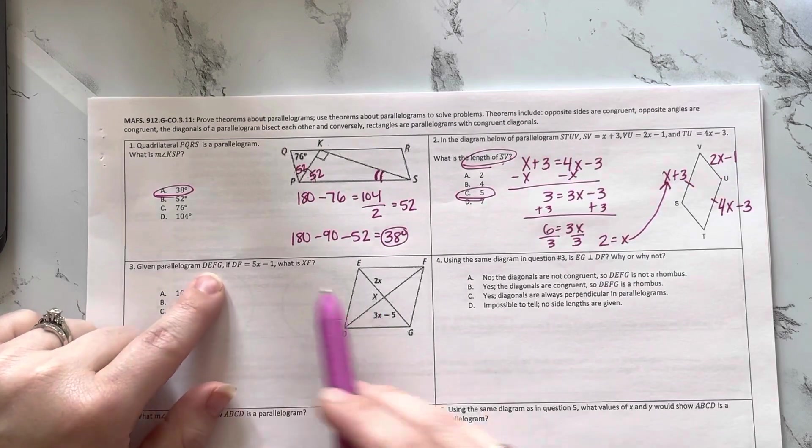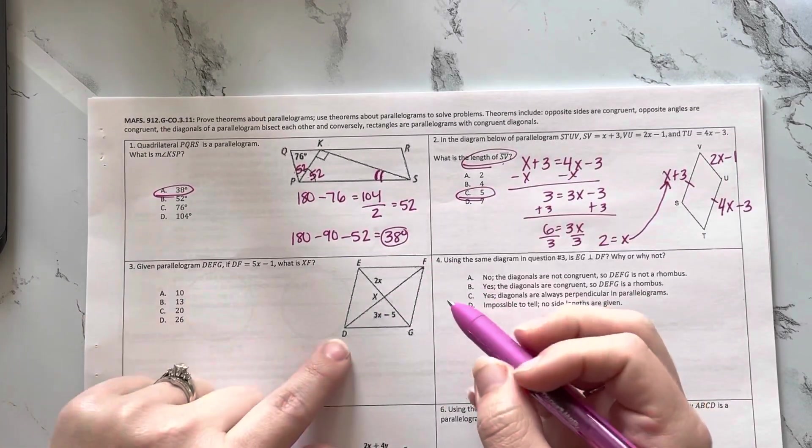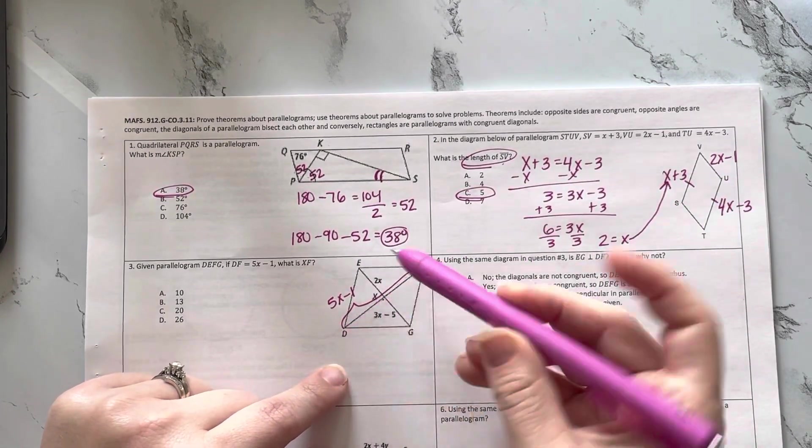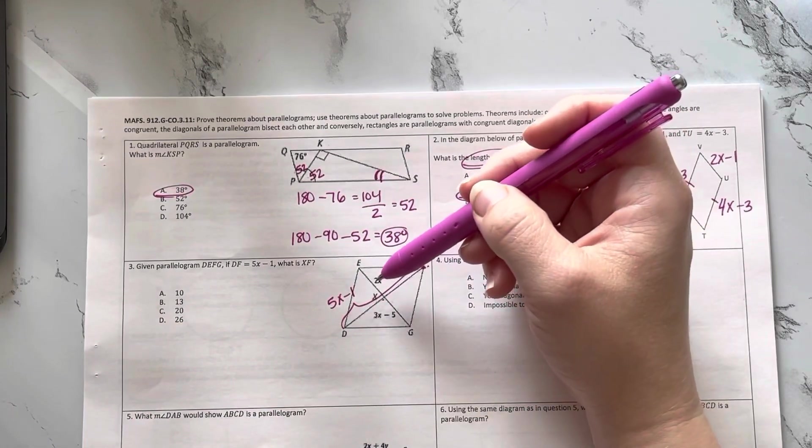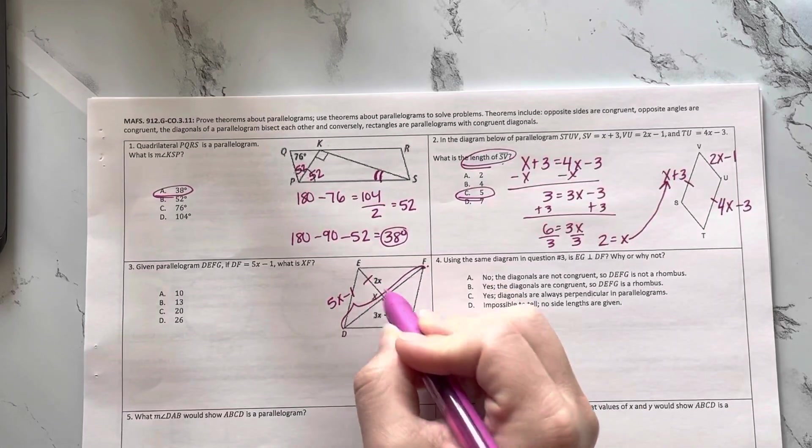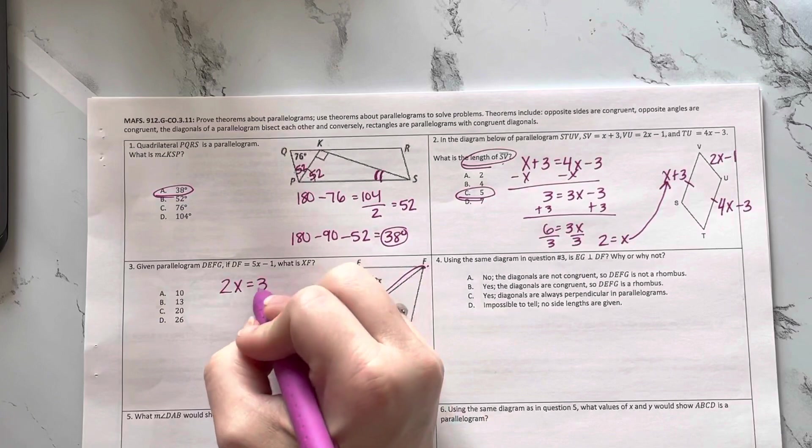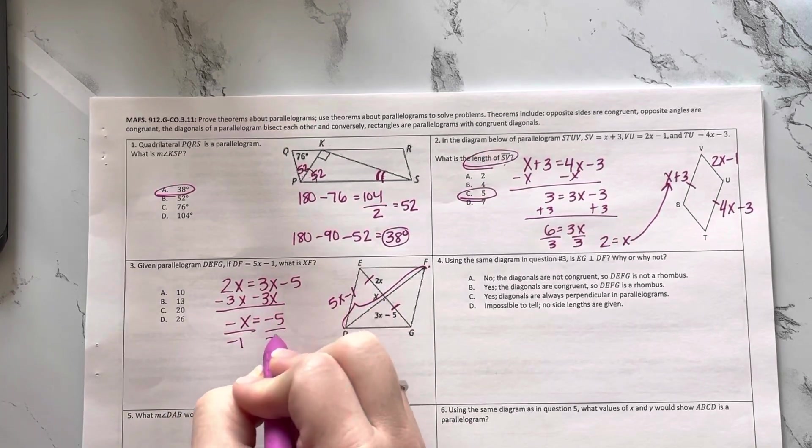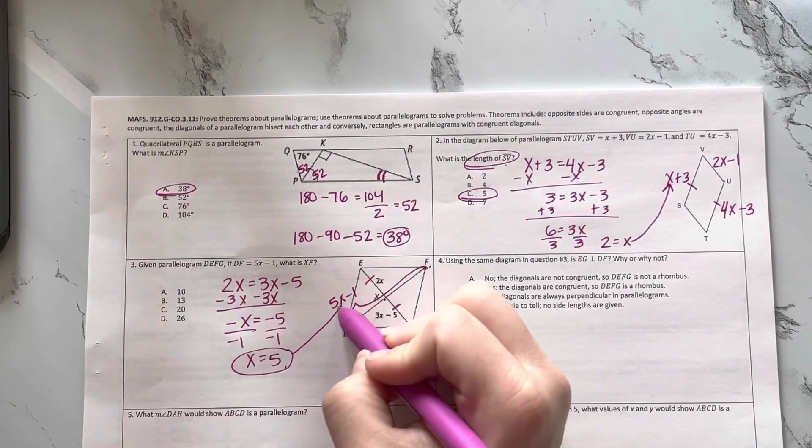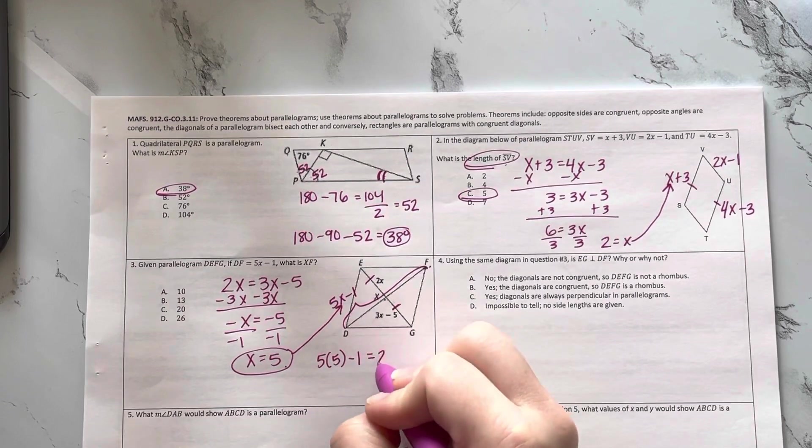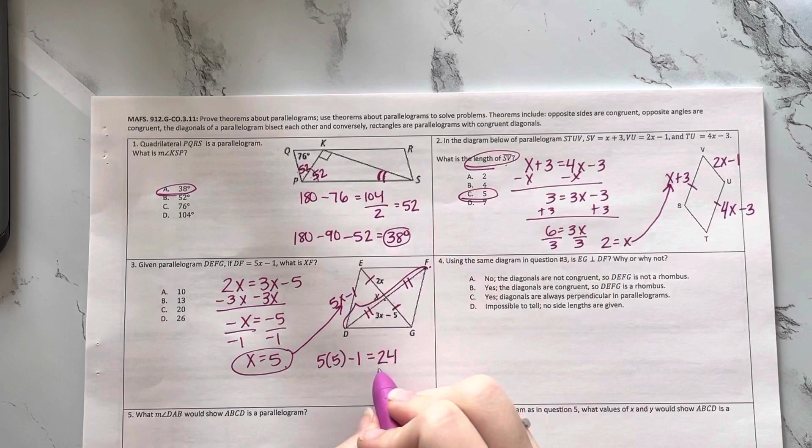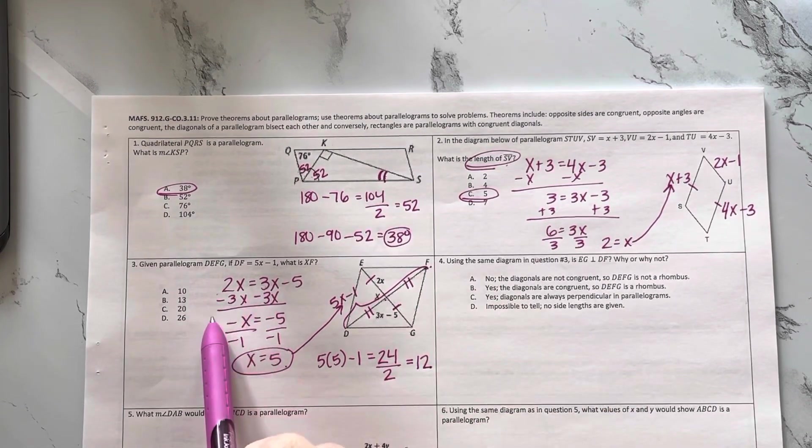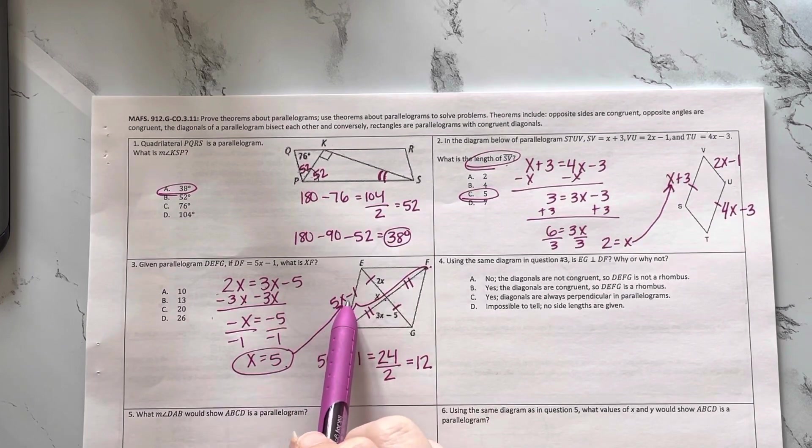Here I'm told in this parallelogram, DF is 5X minus 1. What is XF? Alright, so all I know is the whole thing and these two parts. Now I know that the diagonals in the parallelogram bisect each other, so I need to use this. They bisect each other, so these are congruent. 5X minus 1 equals 2X plus 14. So subtract 3X, divide by negative 1. X is 5. So if X is 5, I can plug it in here. So 5 times 5 minus 1 gives me 24. And again, they bisect each other, so the whole thing is 24. Cut that in half. I don't see that answer. My answer is 12.